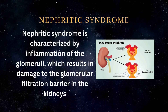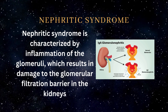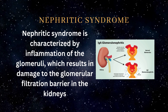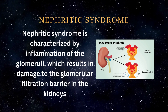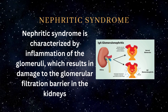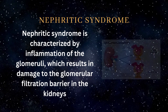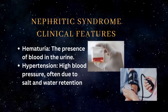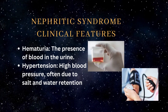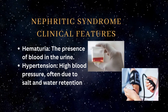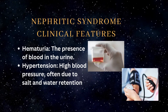On the other hand, nephritic syndrome is characterized by inflammation of the glomeruli, which results in damage to the glomerular filtration barrier in the kidneys. Clinical features of nephritic syndrome include hematuria, which is the presence of blood in the urine.